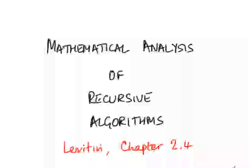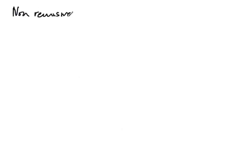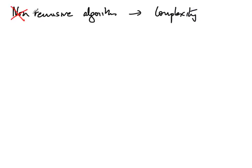Mathematical analysis of recursive algorithms. What we saw last time was how to go from non-recursive algorithms — those which only had loops — to their complexity analysis. What we are going to do this time is eliminate this simplifying assumption and look at recursive algorithms and their complexity.